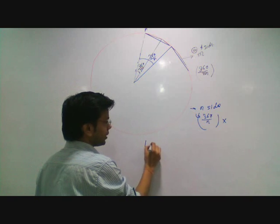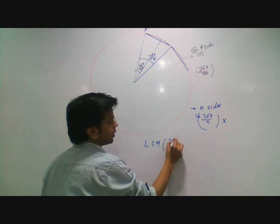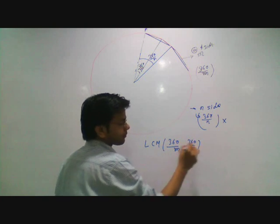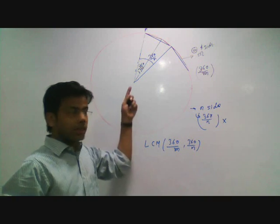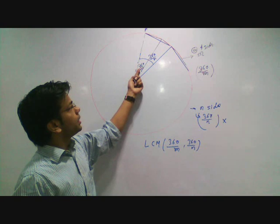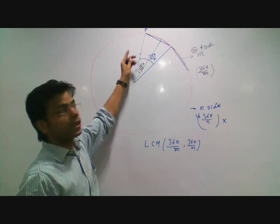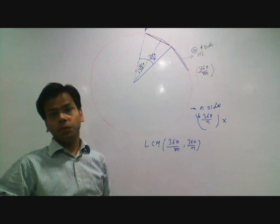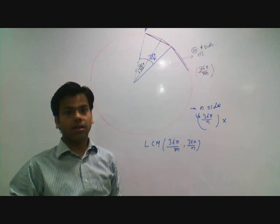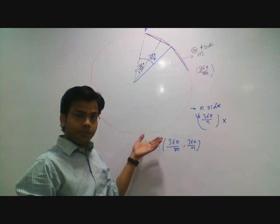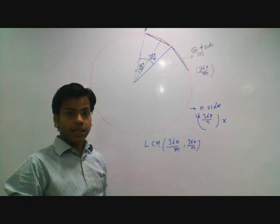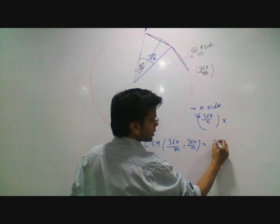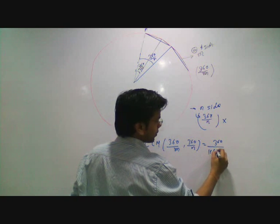The first common angle will be the LCM of 360 upon m and 360 upon n, because each time we are getting a multiple of 360 upon m from the reference line and for the blue lines as well. The LCM formula for a fraction is LCM of numerator over LCM of denominator, so LCM of 360 over LCM of m and n.